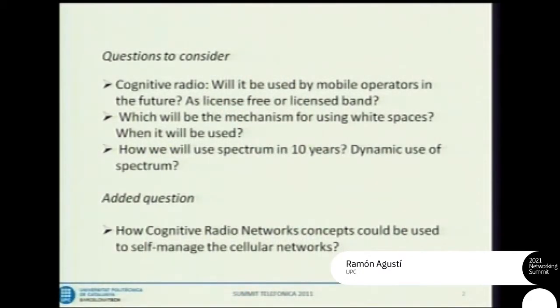In the preparation of this talk, I got from the organizers some questions to consider as guidelines. The first is: will cognitive radio be used by mobile operators in the future as license-free or in a licensed band? Second, what will be the mechanism for using white spaces and when? Third, how will we use spectrum in 10 years — dynamic use of spectrum, maybe? I also took the liberty of including a fourth question more focused on incumbent cellular operators: how could the cognitive radio network concept be used to self-manage cellular networks?